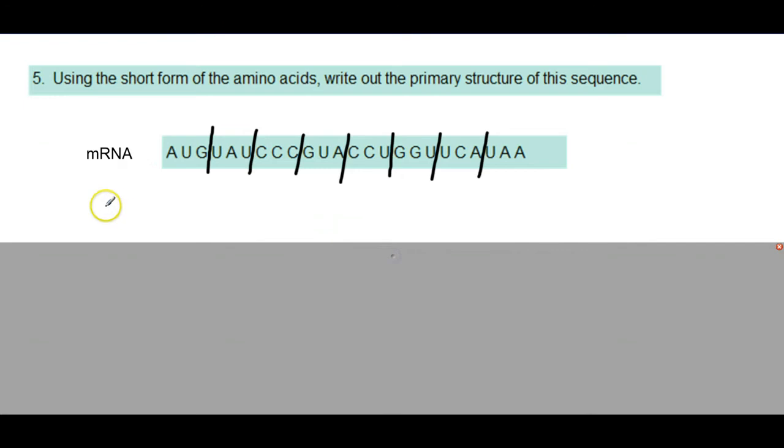So what we normally do - what they're asking us for is a short form of the amino acids. Just as you see them in the genetic code, write out the primary structure of the sequence. This is where you have to go back to your genetic code sheet. What they want us to do is tell us what amino acids are going to join in the order that you see them. So if you recall, AUG represents methionine in the short form. And then we use a dash to separate what's coming next. So UAU is tyrosine or T-Y-R. The next code is CCC. That's proline, and so on.